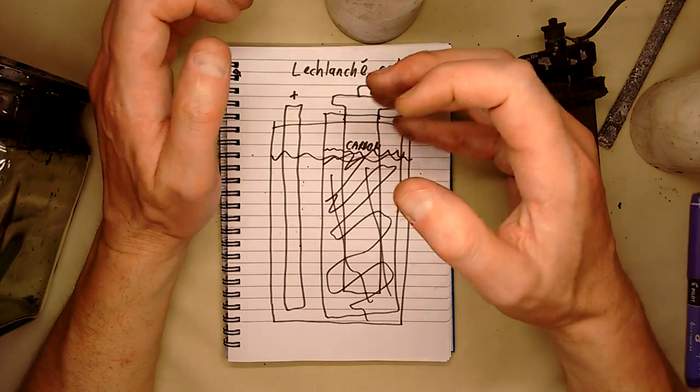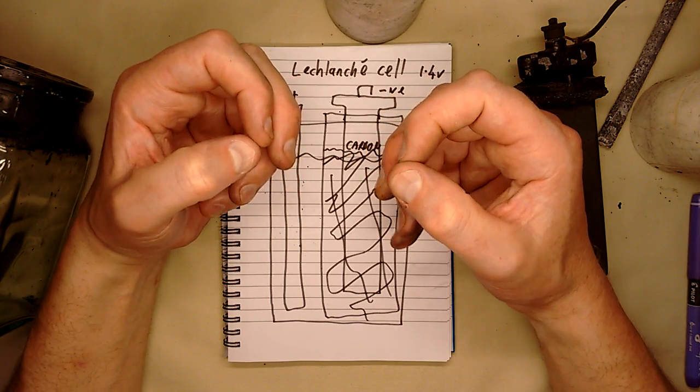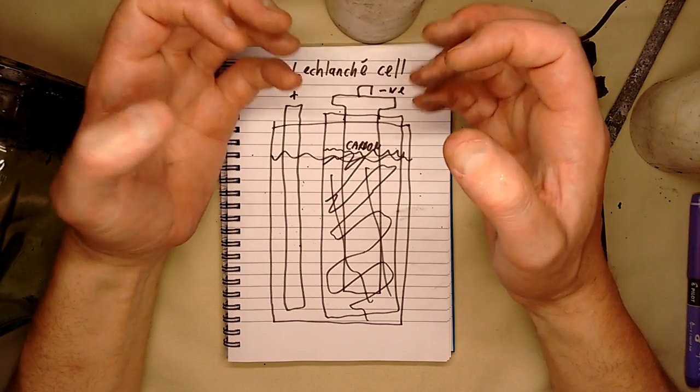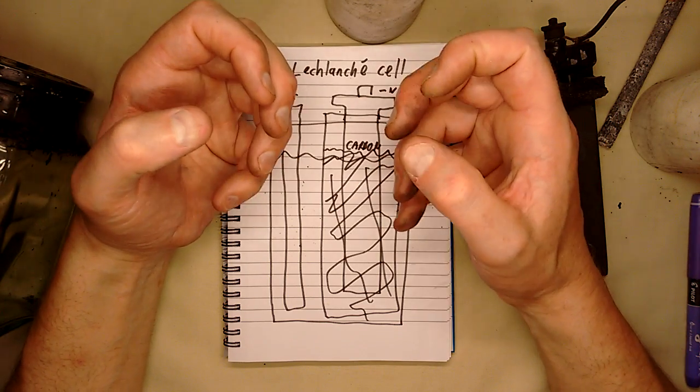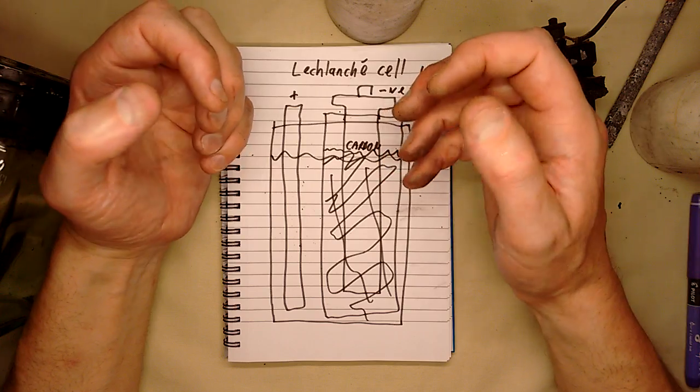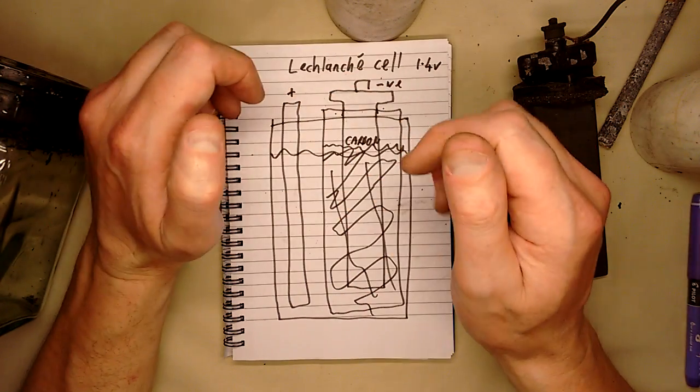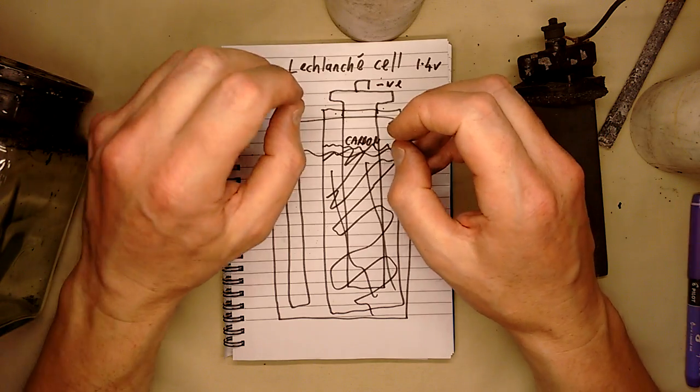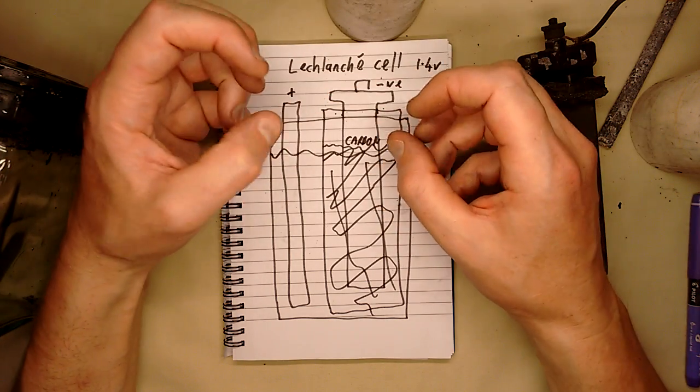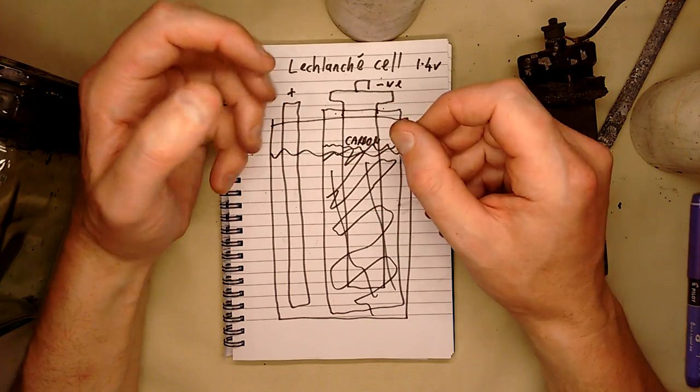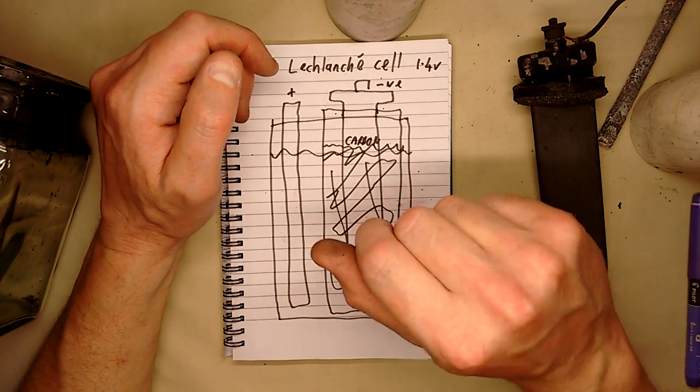And these things, they had a modest resistance and their main weakness was that if you tried to draw current for a long period of time, they were used not just for the call systems, but also for telephone systems. And if the call went on too long, the current that they could supply would gradually drop until the call became unintelligible. And when you break the circuit, they sort of recharge, so to speak, they just sort of chemically regenerate in a way. I'm not sure that regeneration is the correct term, but they recover is the best way to describe it.